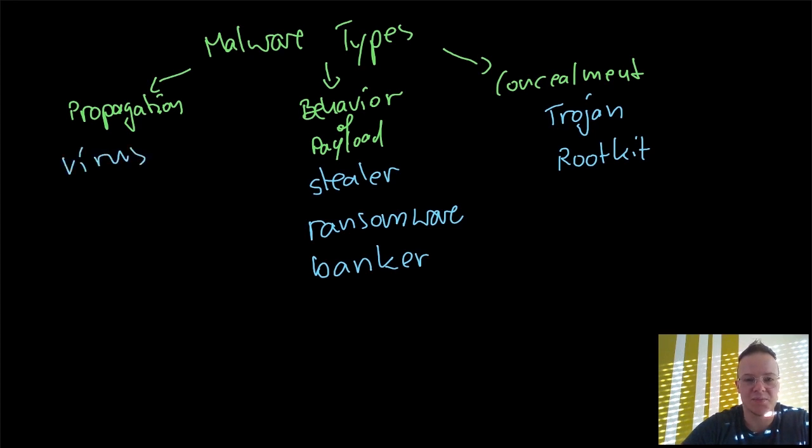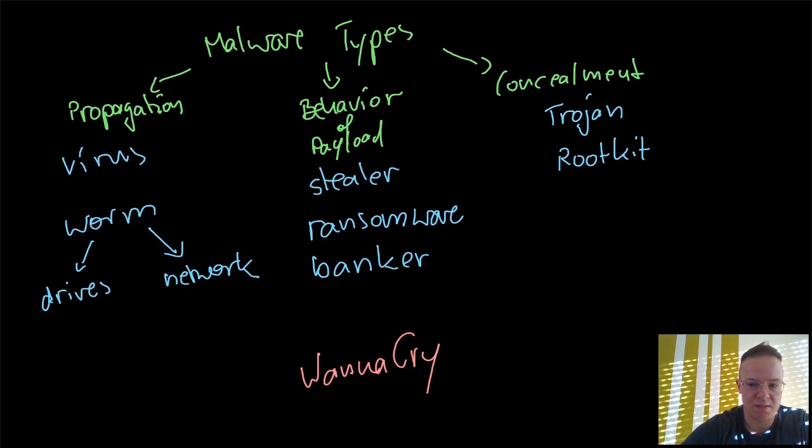Now, propagation. For propagation, it's self-propagation. We have virus and worm or nothing. And worms generally are either network worms or they propagate via USB drives, for instance.